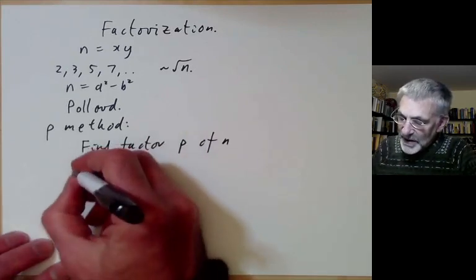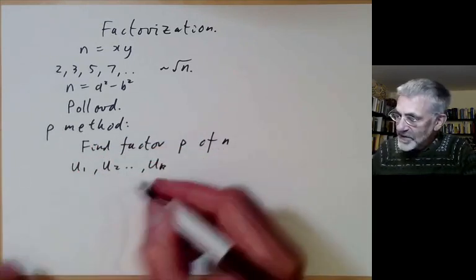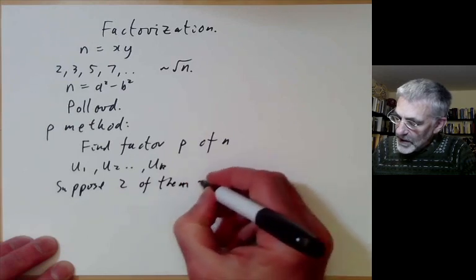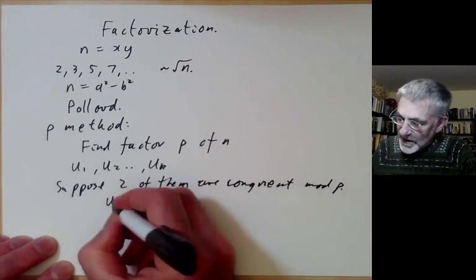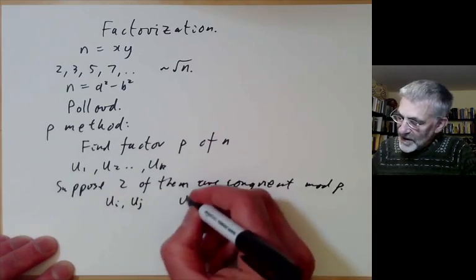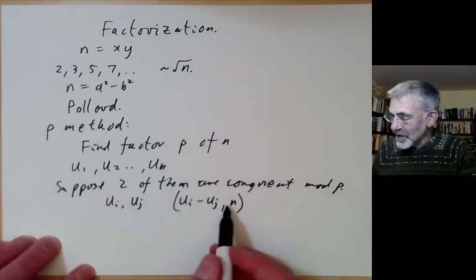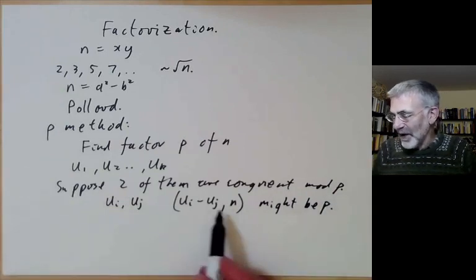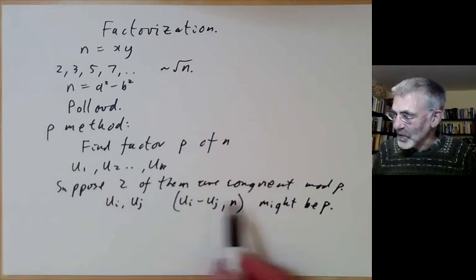We've got this number n, and the problem is find the factor p of n, where p is some prime number. Suppose we choose some random numbers u1, u2, up to uk. And suppose two of them are congruent mod p. Then we can find a factor of n by taking the difference ui minus uj and taking the greatest common divisor with n. With luck, this might be the prime p. This is a sort of probabilistic algorithm that will sometimes work.